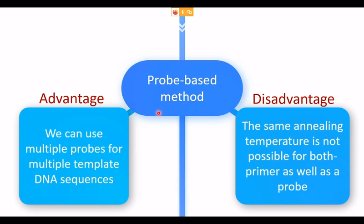The probe-based method has its own advantages. You can multiplex — using multiple probes for multiple templates — detecting two, three, four, or five target DNAs at a time, each with a differently colored fluorescent molecule. Most COVID-19 kits are multiplex kits using the linear probe method.